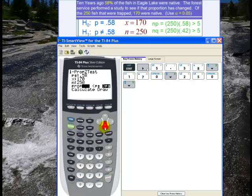And then I go down. I want P not equal to 0.58, so I click on the not equal to P naught, hit enter, and then go down. And I hit enter for calculate.